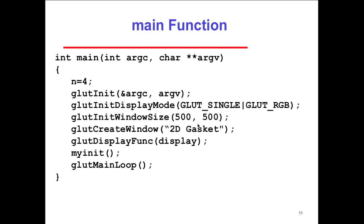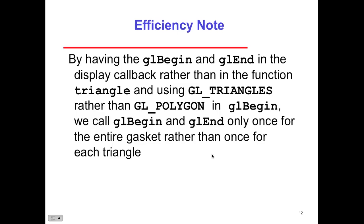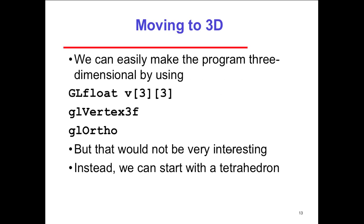Display the triangle. Run through the main function, as we saw before, the window, the mode. This is a pretty generic code. You can take it from the hello world. And then we have an efficiency note. By having the GL begin and the GL end in the display callback rather than in the function of the triangle, and using the GL triangles rather than the GL polygons in the GL begin, we can call the GL begin and we can call the GL end only once for the entire gasket rather than once for each one of the triangles. So depending upon which technique you're using, are you drawing the polygon or are you drawing triangles to create the polygon? It depends on how many times the begin and the end is going to happen. That basically starts our rendering. So the rendering starts with the begin, ends with the end. So it basically tells us how efficient. We can render it all at once or we can render it individually. Rendering it individually is more time consuming. Rendering it all at once is faster.